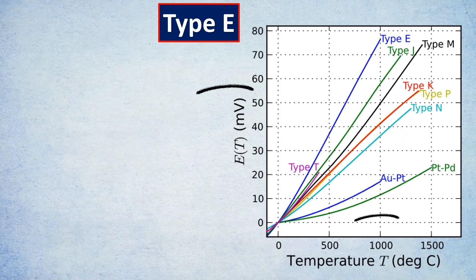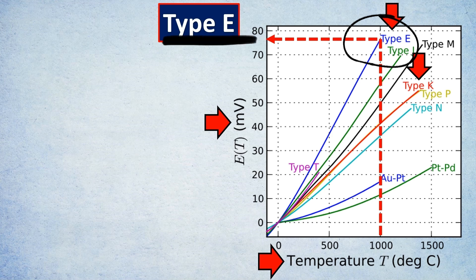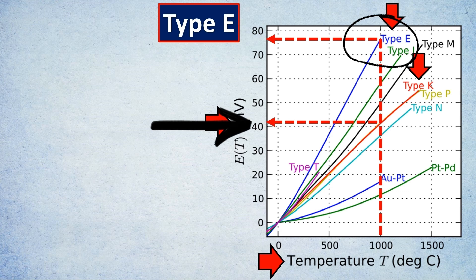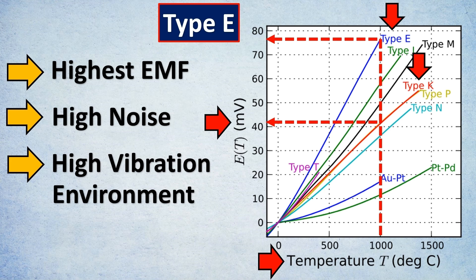Type E thermocouples: if you see the EMF chart versus temperature, you'll notice Type E generates the highest EMF at around 78-79 millivolts, compared to Type K at just 42 millivolts. In cases where you require the highest EMF—in high noise requirements or high vibration environments—Type E is the most preferred.